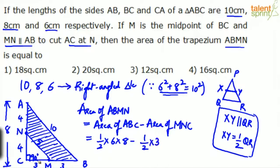Simplified. So 6 into 8 is 48. 48 by 2 is 24. 3 into 4 is 12. 12 by 2 is 6. 24 minus 6 is 18 square centimeter. This will be the final answer, which is option 1.